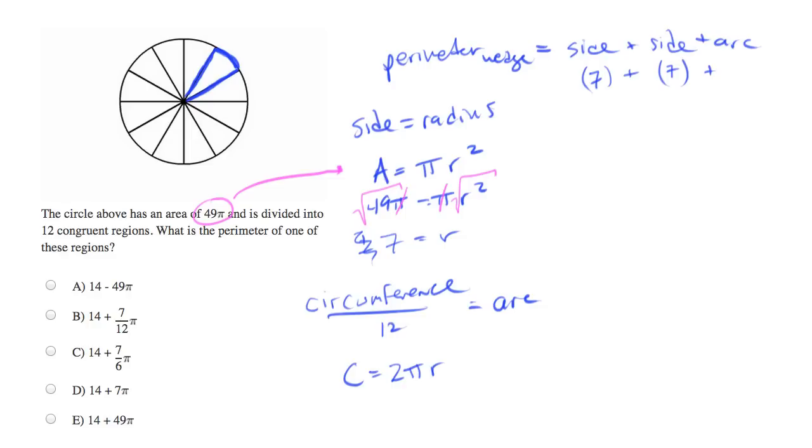And we already have the radius is 7. So let's plug that in. The circumference equals 2 pi times 7, or 14 pi.